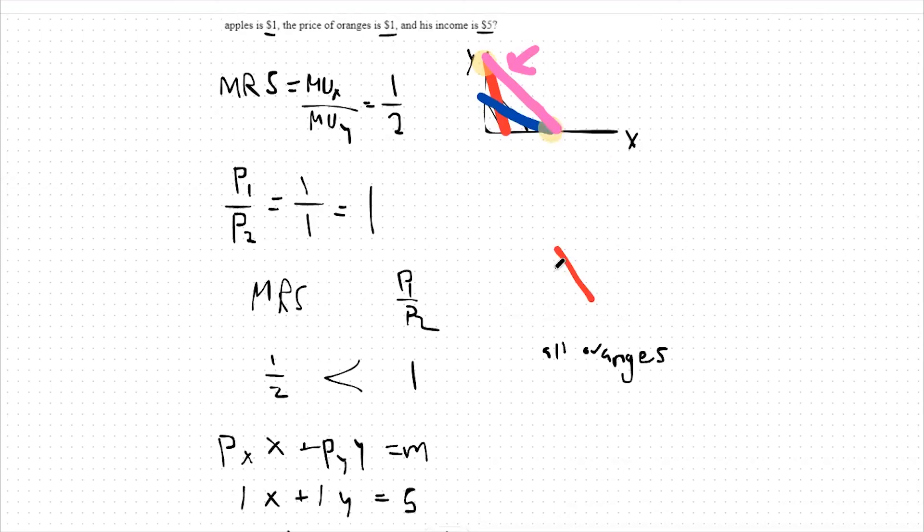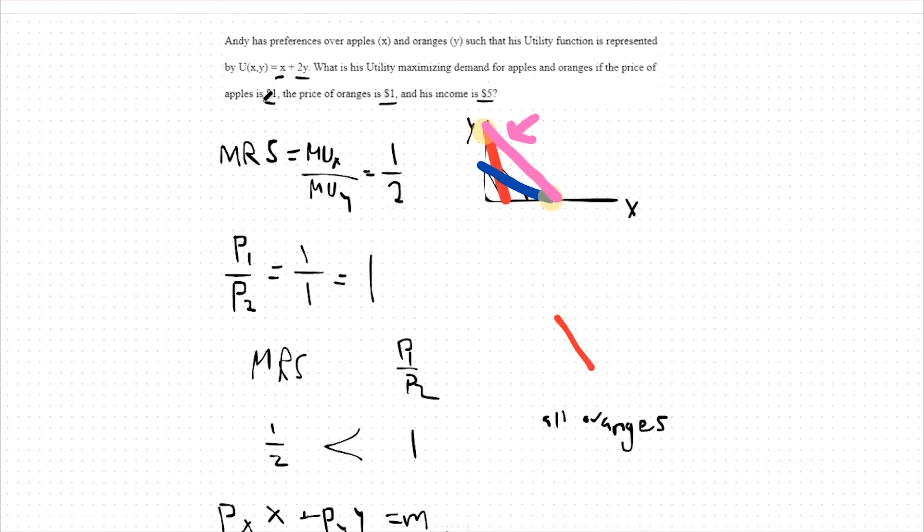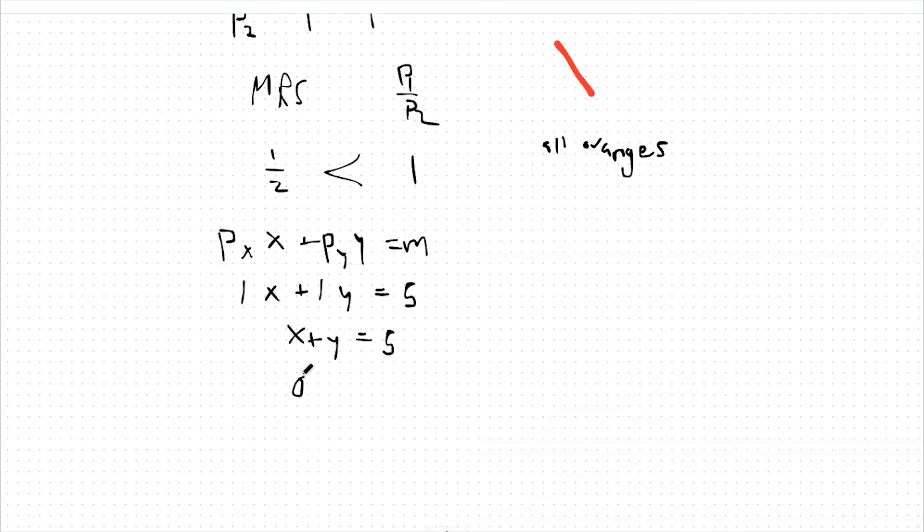Since we know we buy all oranges and no apples, we will say zero plus y equals five, so y equals five. This means we buy zero apples and five oranges optimally.